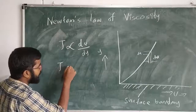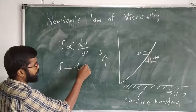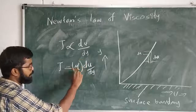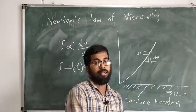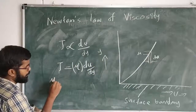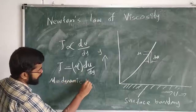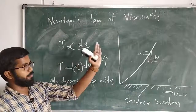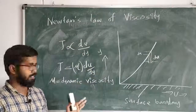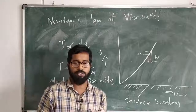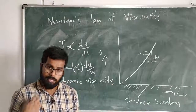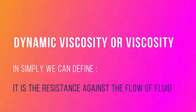Newton says there is a constant of proportionality: Mu into du by dy. What is the term Mu? Dynamic viscosity. So Mu is equal to that constant. We call this Newton's law of viscosity. Newton's law of viscosity introduces the term dynamic viscosity.